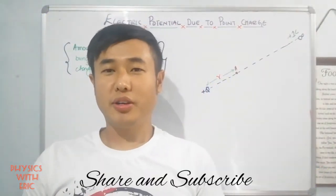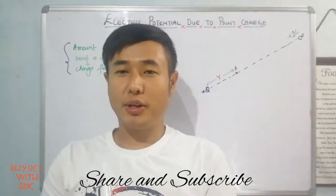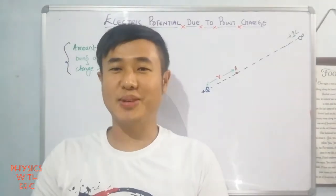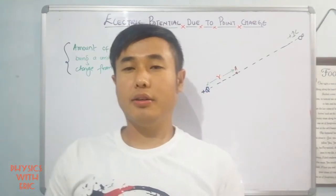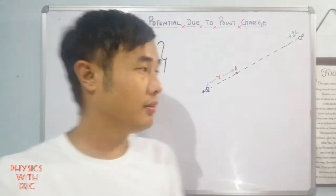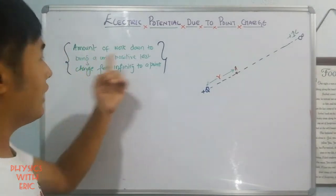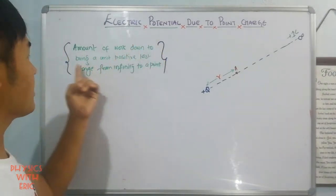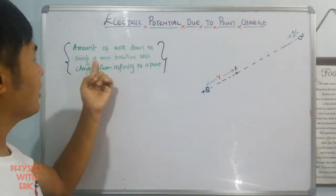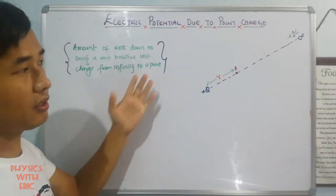Hello everyone. I'll be talking about electric potential due to point charges in this video. Electric potential, as discussed in a previous lecture, is the amount of work done to bring a unit positive test charge from infinity to a point.